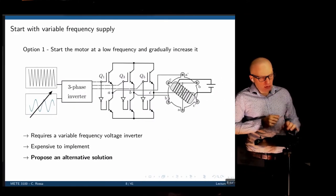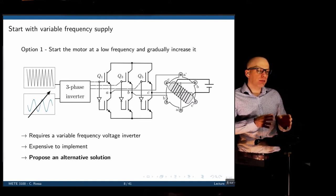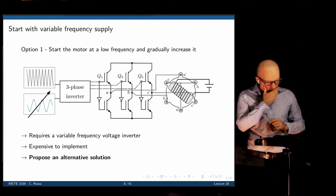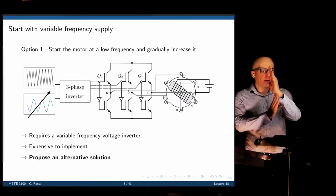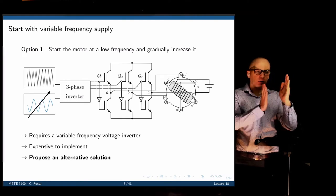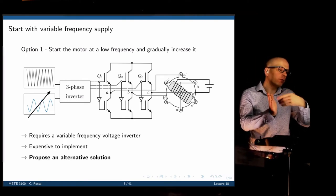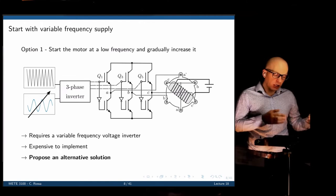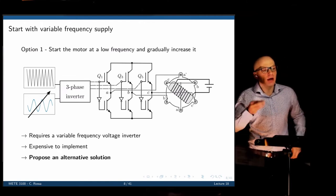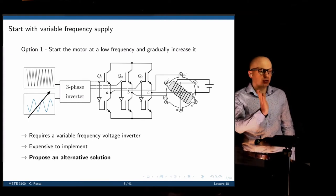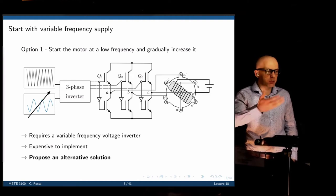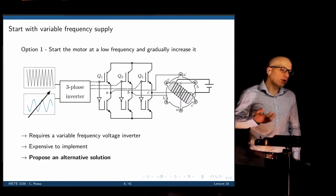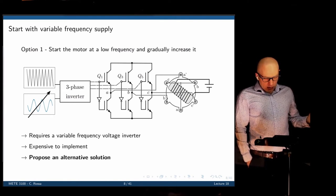If we start with a very low frequency, the rotor has time to develop a speed and follow the rotating magnetic field, so it would be self-starting. If we start the motor at a high frequency, it's not going to self-start. But at one hertz — one revolution per second — the rotor has sufficient time to develop speed and will eventually follow the magnetic field. Then we can slowly increase the frequency up to the nominal synchronous speed.